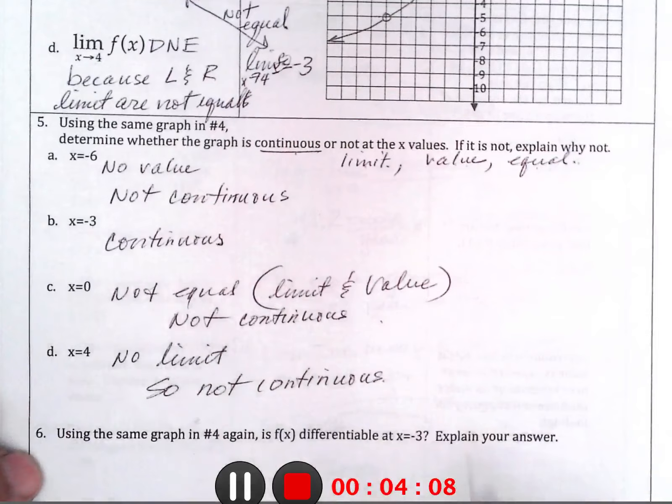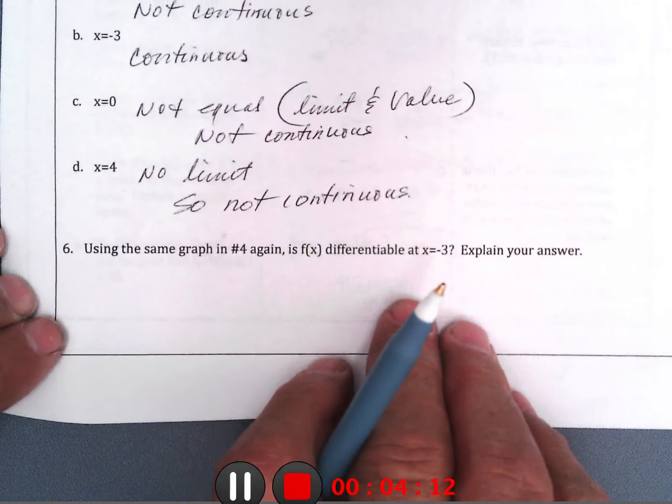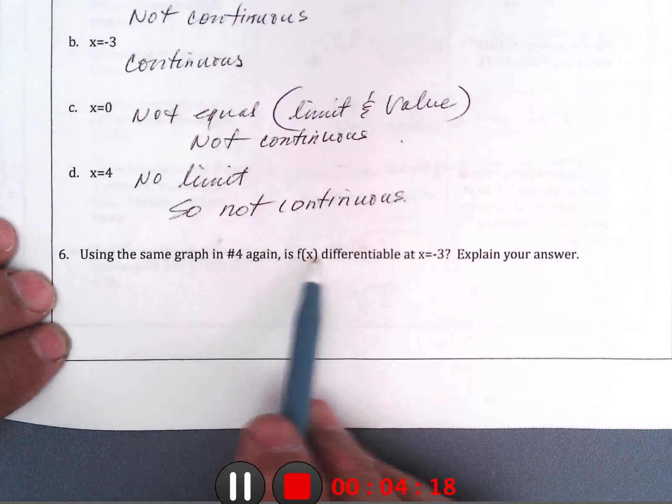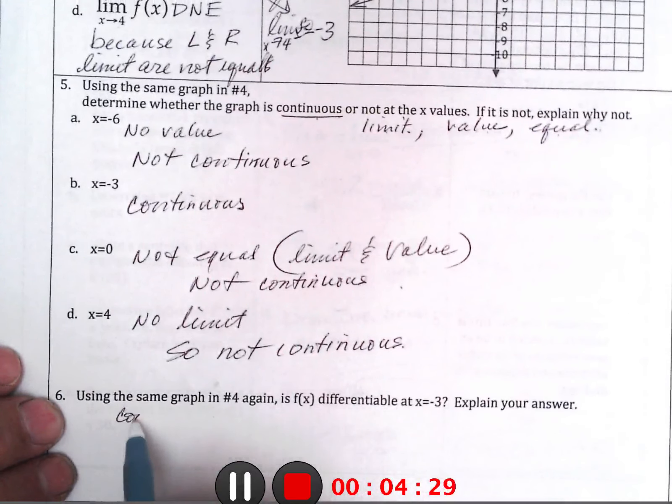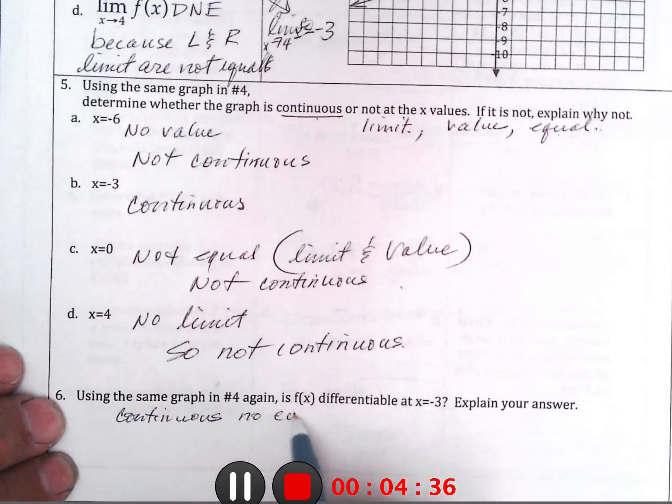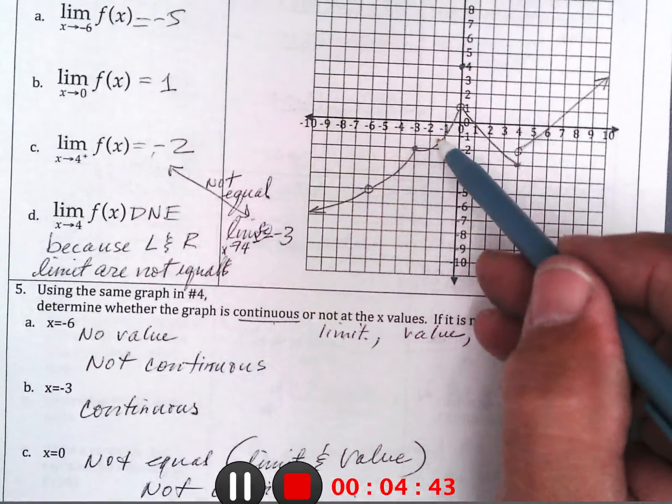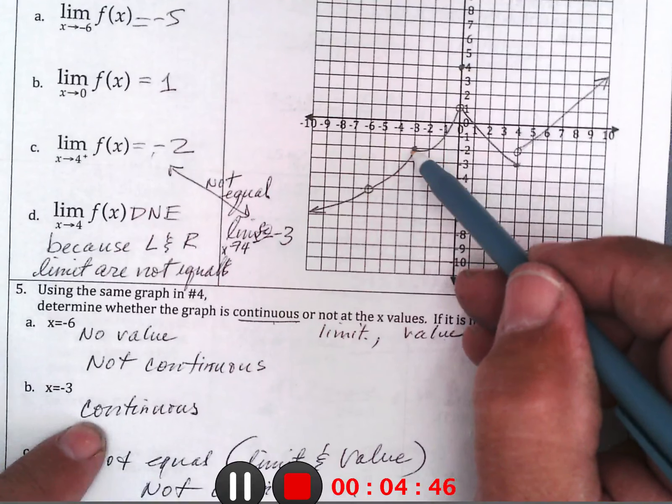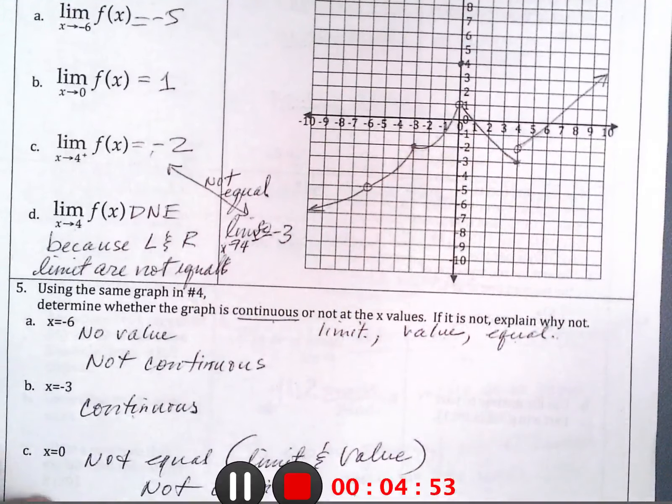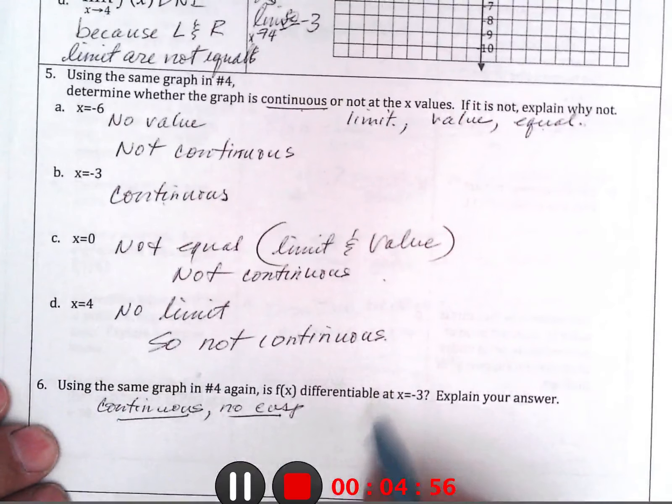And finally, number 6. Using the same graph again, is f, again, is f of x differentiable at x equal negative 3? At negative 3, it has to be continuous, and no cusps. In this case, it is continuous, and we figured that out in part B, has limits and a value, and they're all the same, but it's not differentiable.